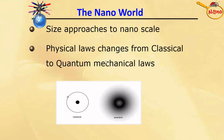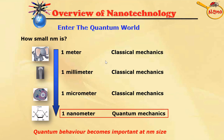As we go from bulk to the nano scale, classical mechanical laws give way to quantum mechanical laws. That means you have to consider the quantum mechanical effects occurring in that material. This slide represents how when we move from the bulk to the nanometer scale, you have to obey the laws of quantum mechanics, and those quantum mechanical laws become important and must be considered.